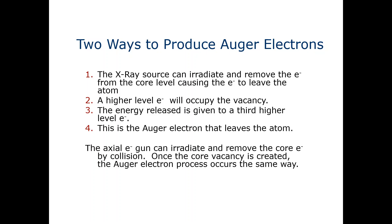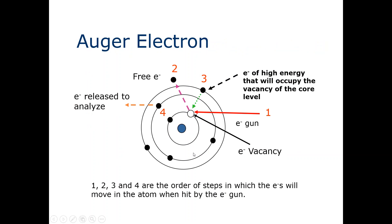In another way, axial electrons can irradiate and remove the core electrons by collision. Once the core vacancy is created, the Auger electron process occurs the same way as mentioned. So these are the two main procedures by which we can produce the Auger electron — the four-step process, and this direct process where axial electrons irradiate and remove the core electrons by collision.